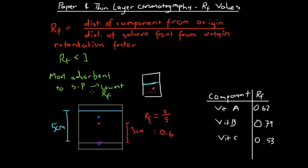Using RF values means we don't have to run standards. We can compare the RF values we get for components of a mixture to published values. For example, we might look up data showing that vitamin A under certain conditions will have a given RF value. We can compare RF values obtained experimentally with published RF values for different substances.